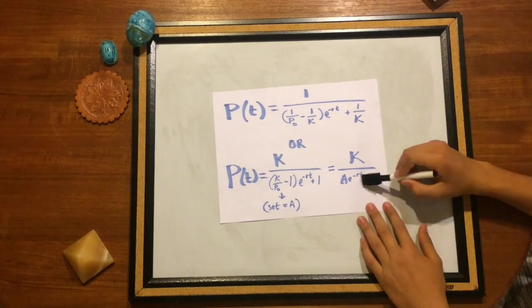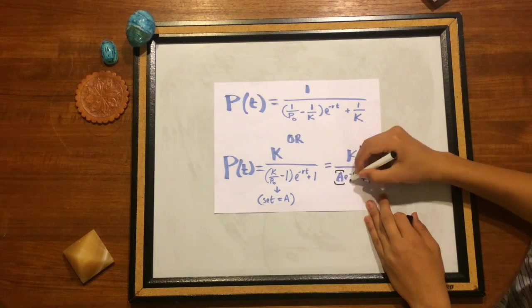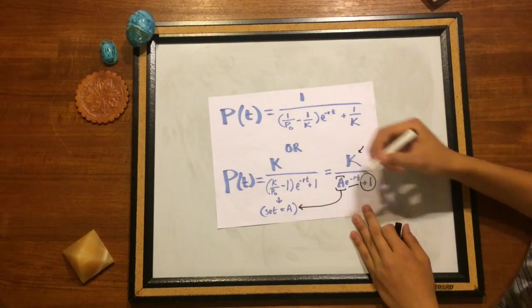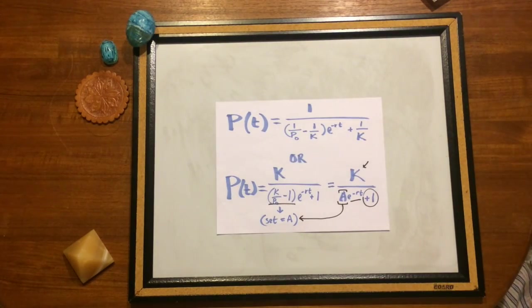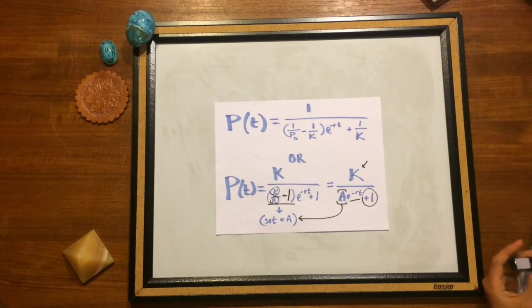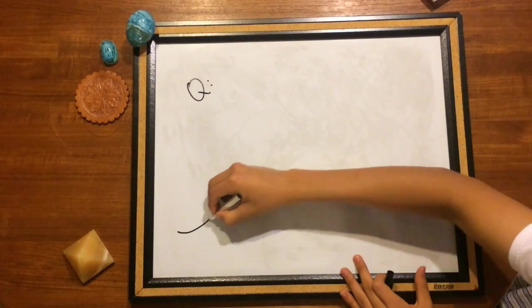where the size of the population with respect to time is equal to k over some constant a times e to the power of negative rt plus 1, where a is equal to the carrying capacity divided by the initial population size minus 1. The knowledge that all species on earth tend to follow this growth model begs the question,